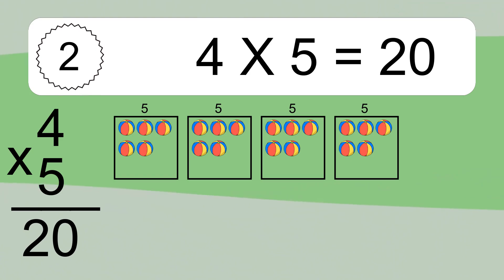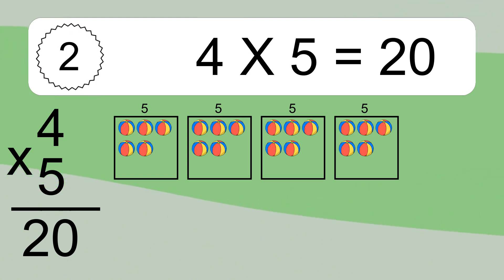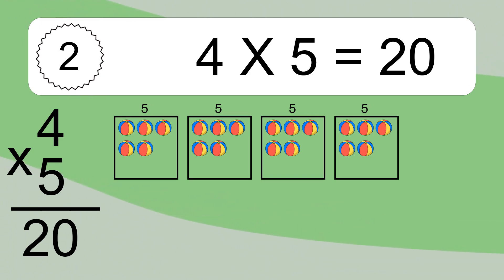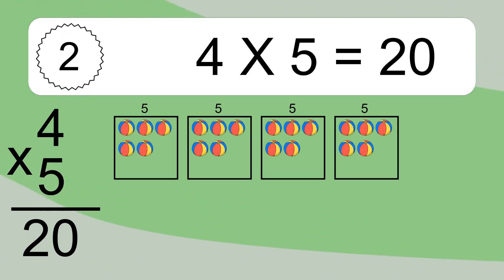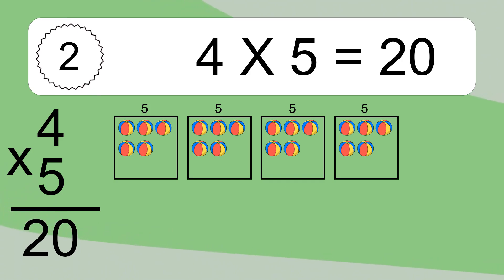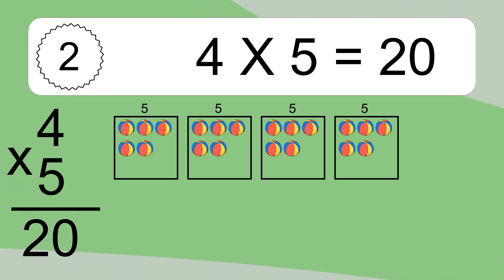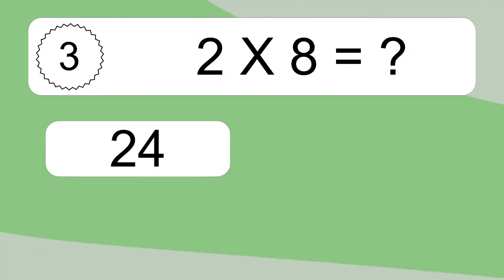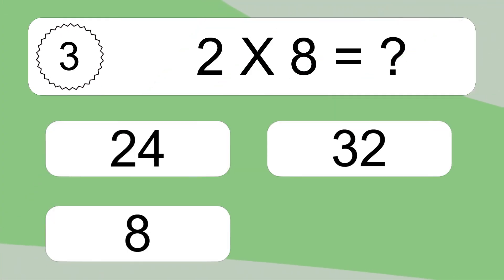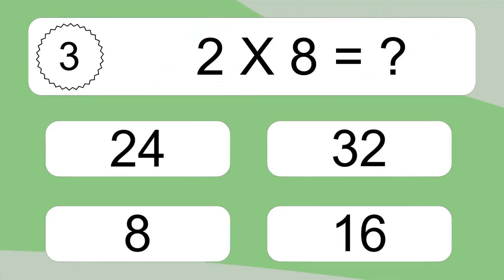We have 4 boxes, and each box has 5 colorful balls inside. If you count all the balls in all the boxes together, you will have 4 times 5 balls. This equals 20 balls.